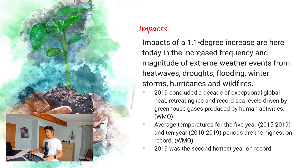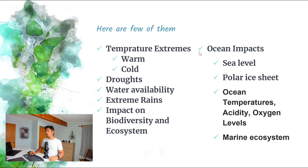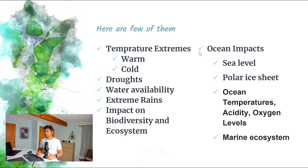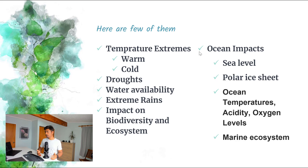The impacts of having all these problems are going to look something like this: extreme temperatures — both cold and warm — droughts, reduced water availability, extreme rains, and impacts on biodiversity and ecosystems. On sea and ocean levels, the impact will be on sea level rise, polar ice sheet melting, rising ocean temperature and acidity, decreasing oxygen levels, and marine ecosystems being in a dangerous position.